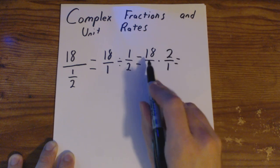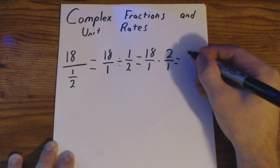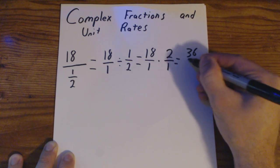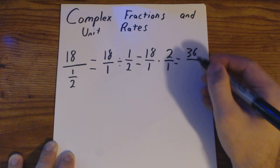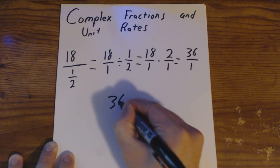Okay, so now when we're multiplying two fractions, we just have to work our way across. 18 times 2 is going to be 36. 1 times 1 is going to be 1. Simplified, our answer is simply going to be 36.